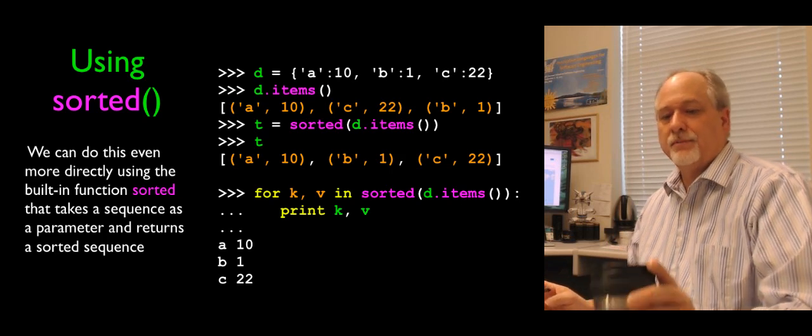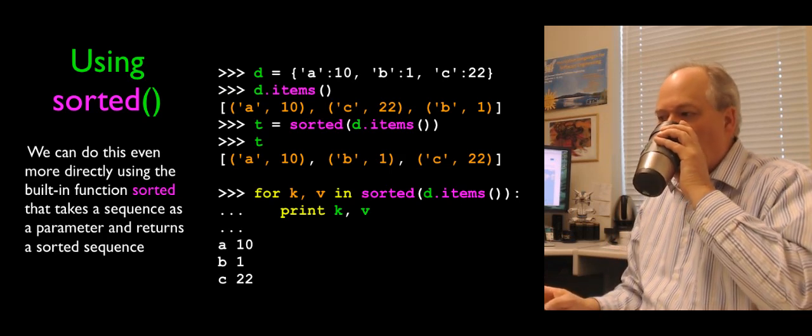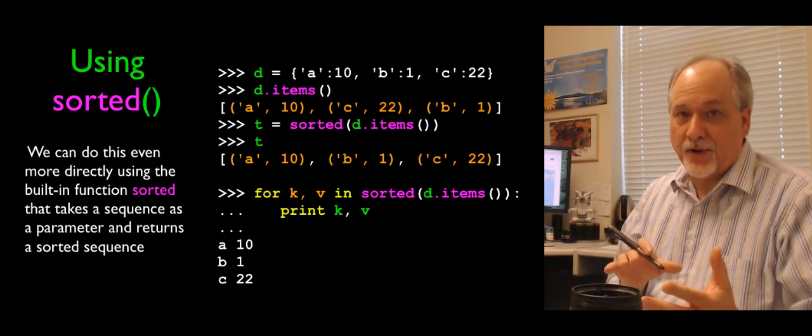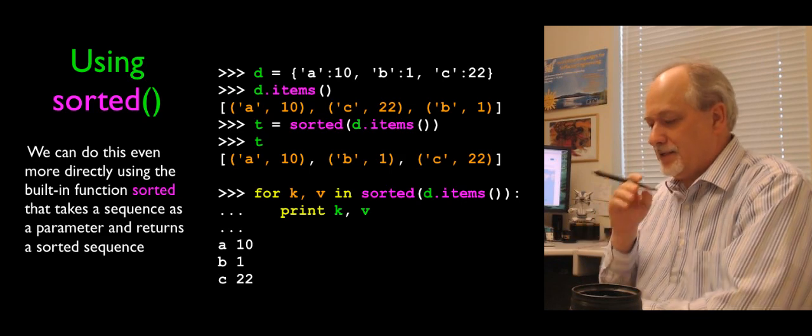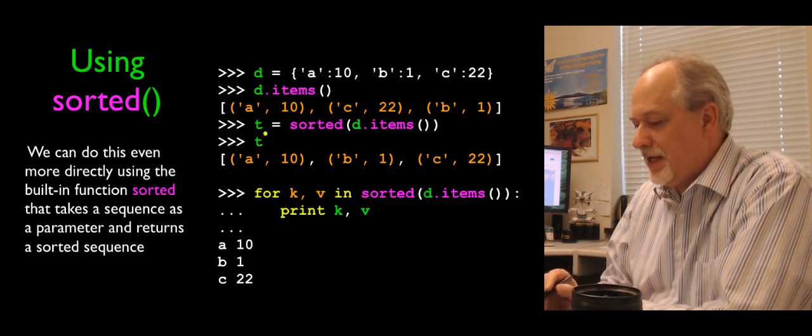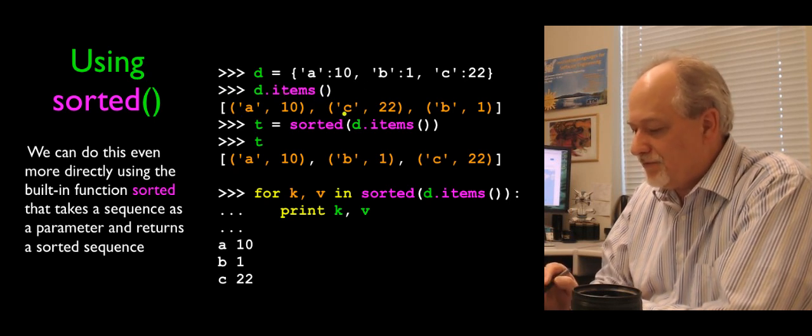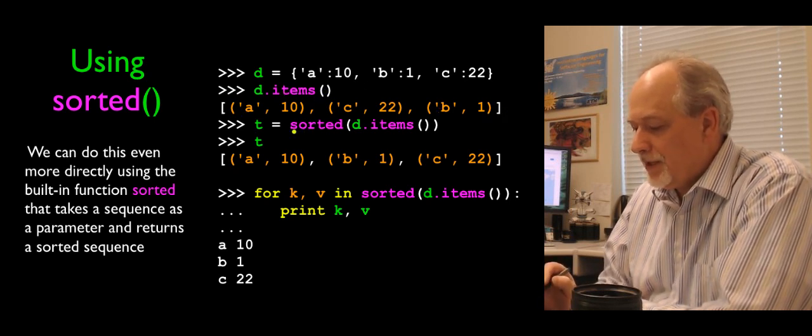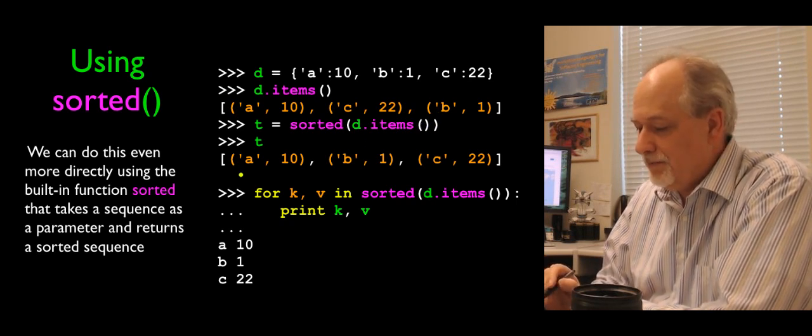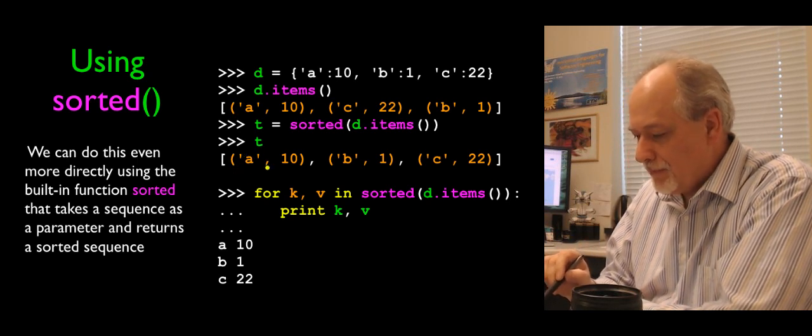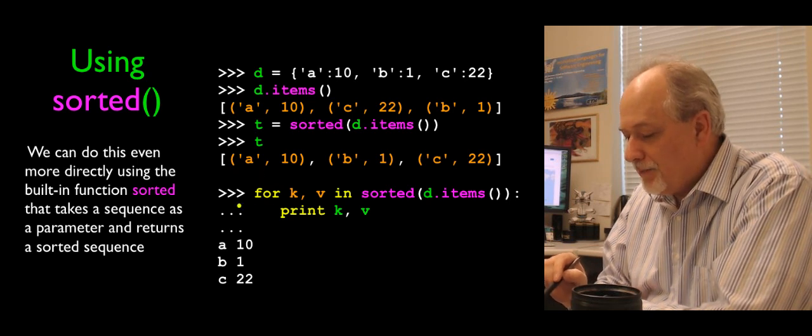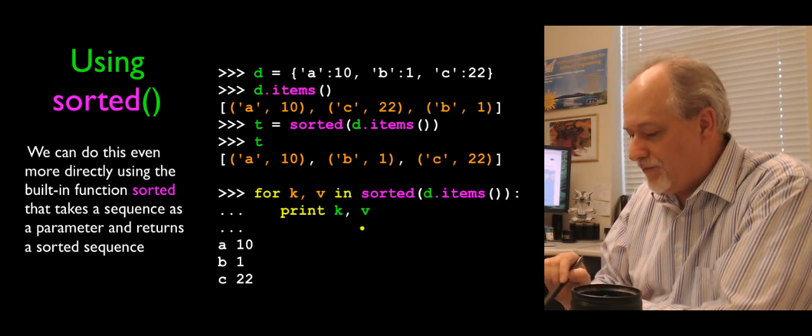There is a built-in function in Python called sorted, which takes as a parameter a list, and gives you back a sorted version of that list. So we can collapse these operations by saying, well, d.items is this list of tuples non-sorted. But sorted of d.items is that same list of tuples, but then sorted. So immediately in one step, we have A, B, and C properly sorted.